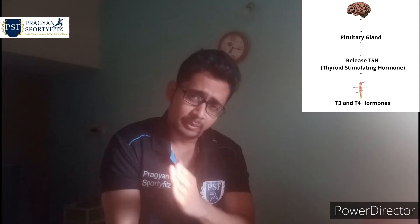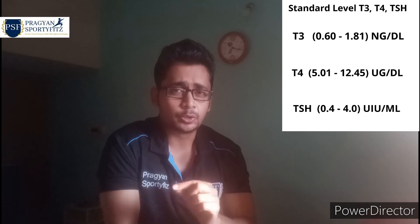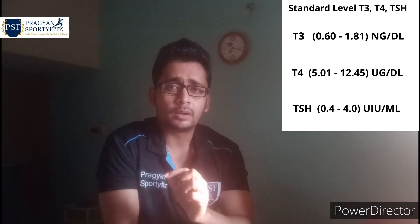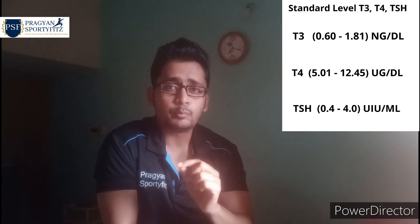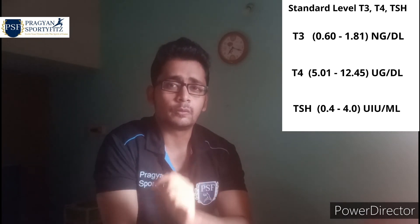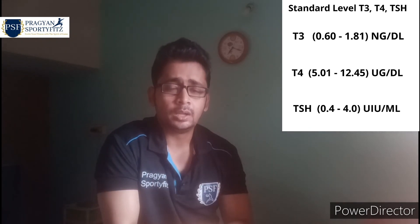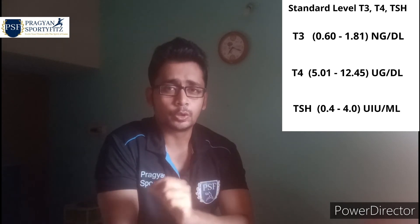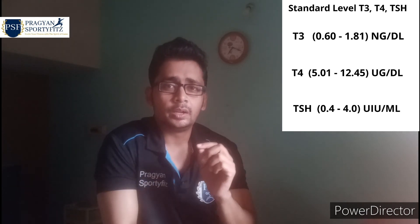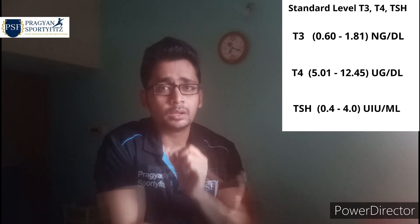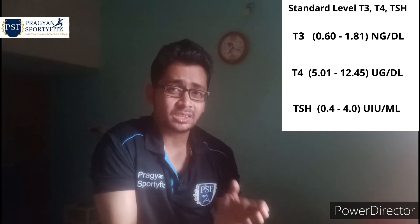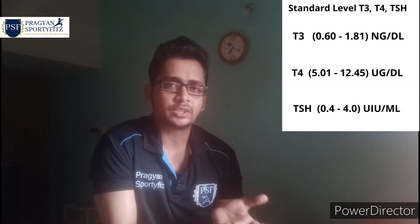What are the normal T3, T4, and TSH levels? According to medical standards: T3 should be 0.60 to 1.81 nanograms per deciliter; T4 should be 5.01 to 12.45 micrograms per deciliter; and TSH should be 0.4 to 4.0 milli-international units per liter. If your thyroid report falls within these ranges, it is considered normal.